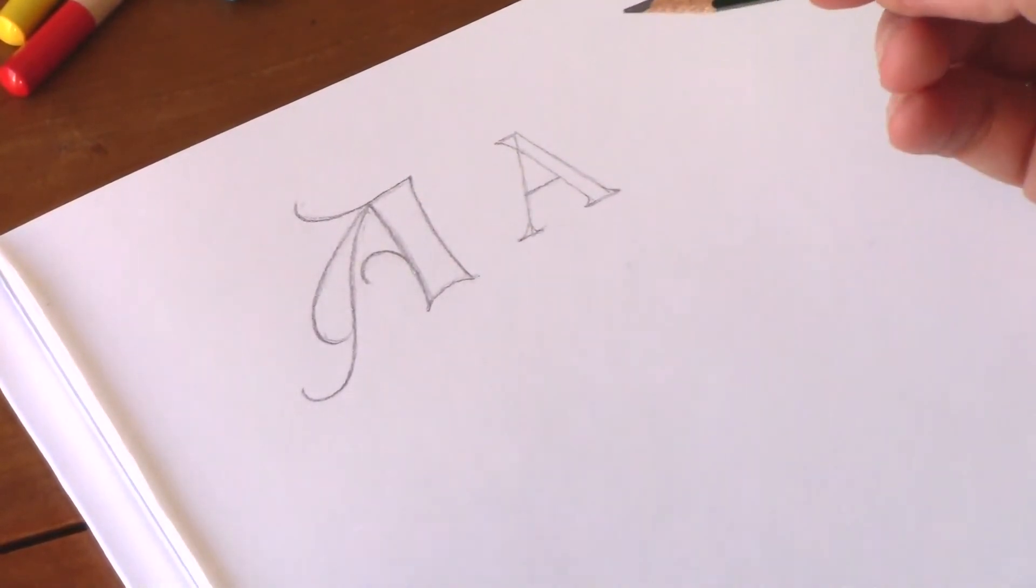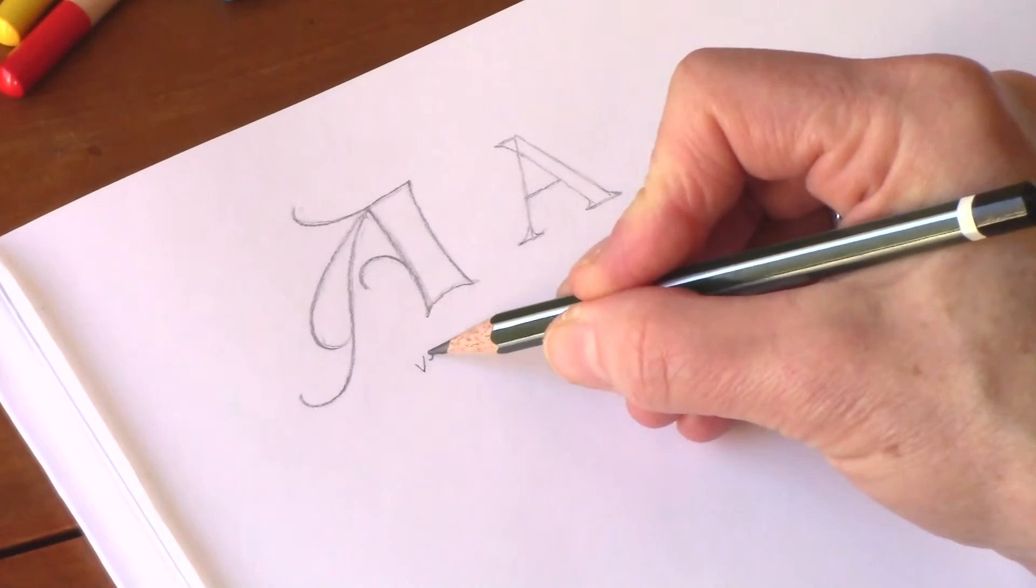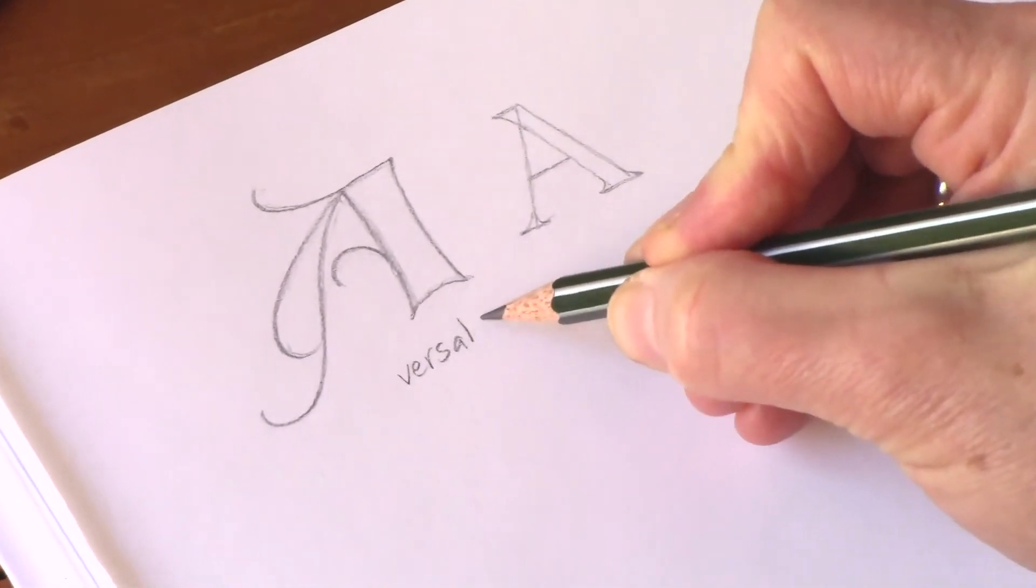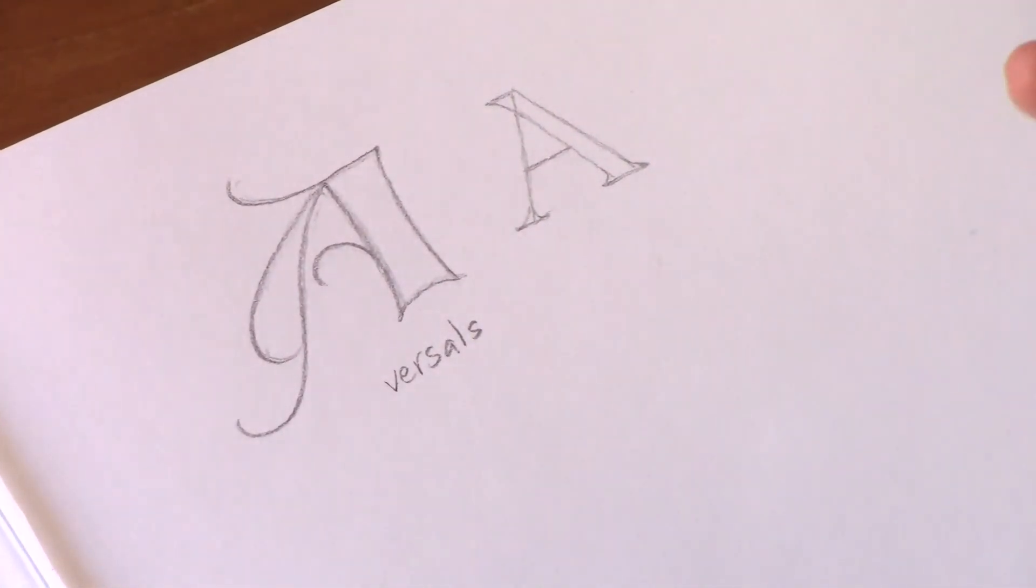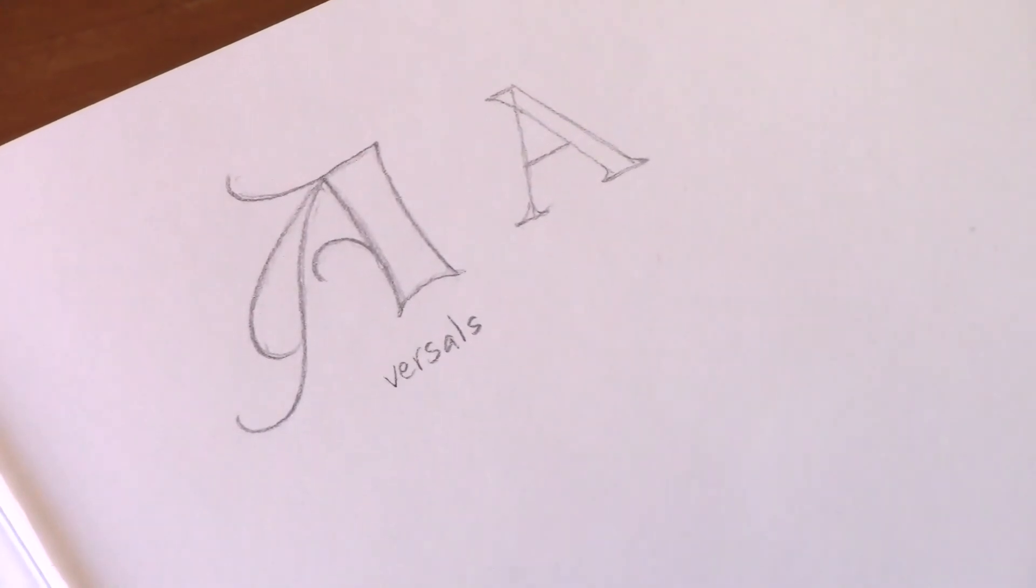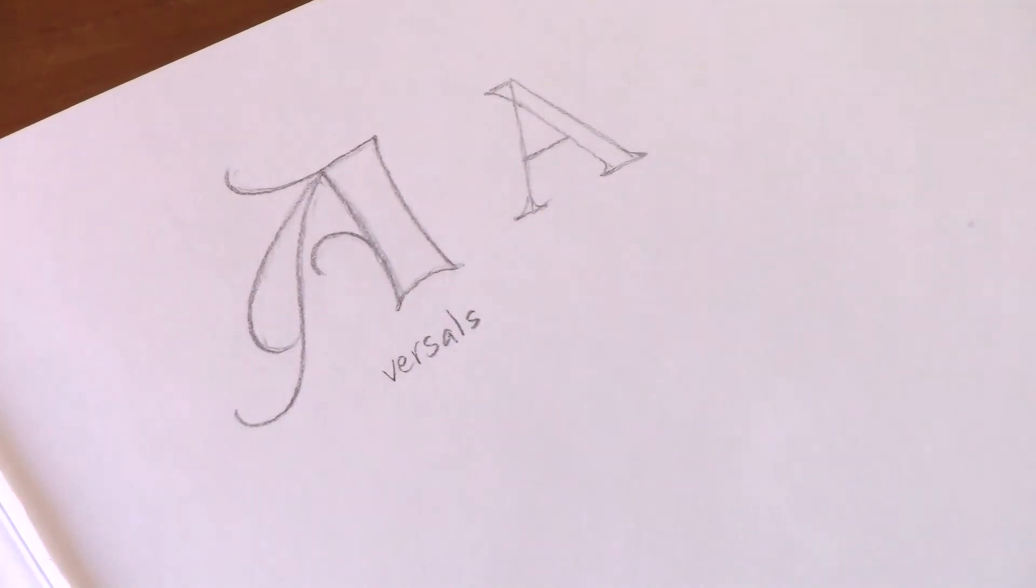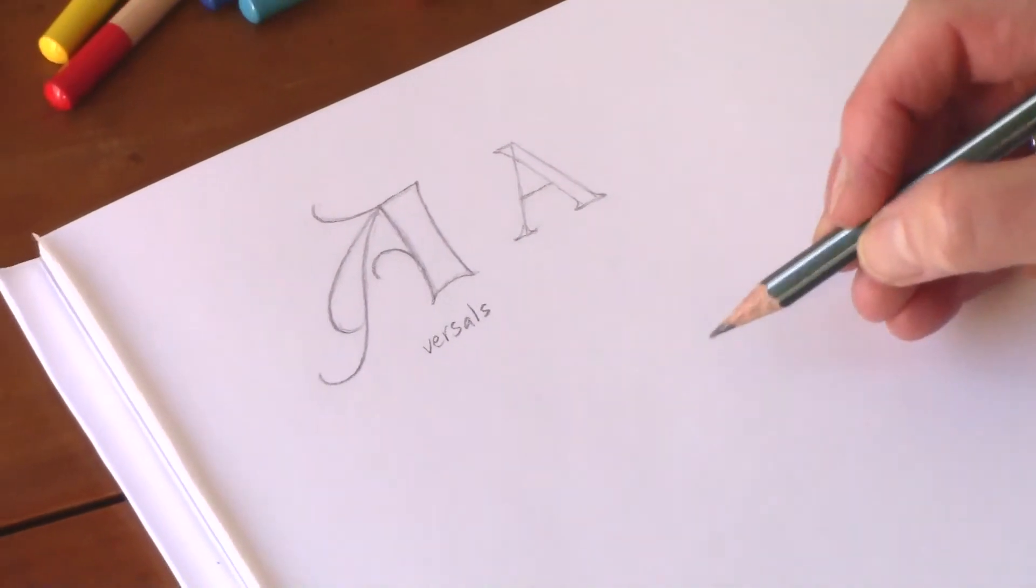Then in the Middle Ages, we soften it because these are versals. Versals means they were the letters at the beginning of verses, at the beginning of chapters. You want to decorate them a bit more, make them shine and be more colorful. So this is the form that was developed. Let's do this together.